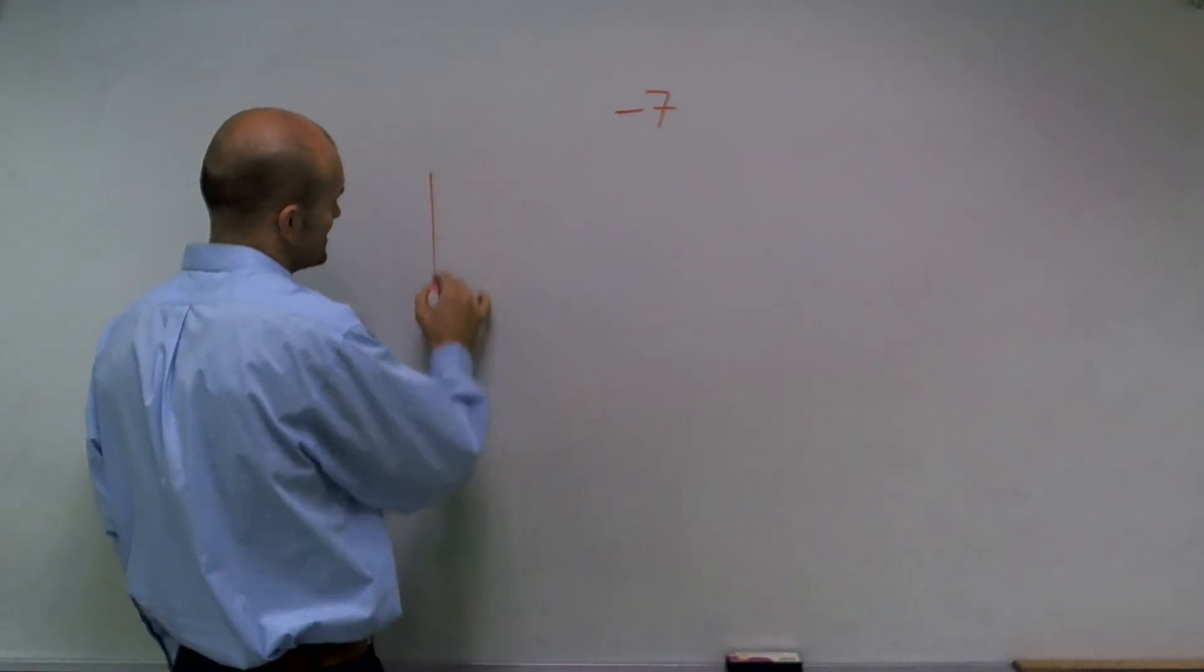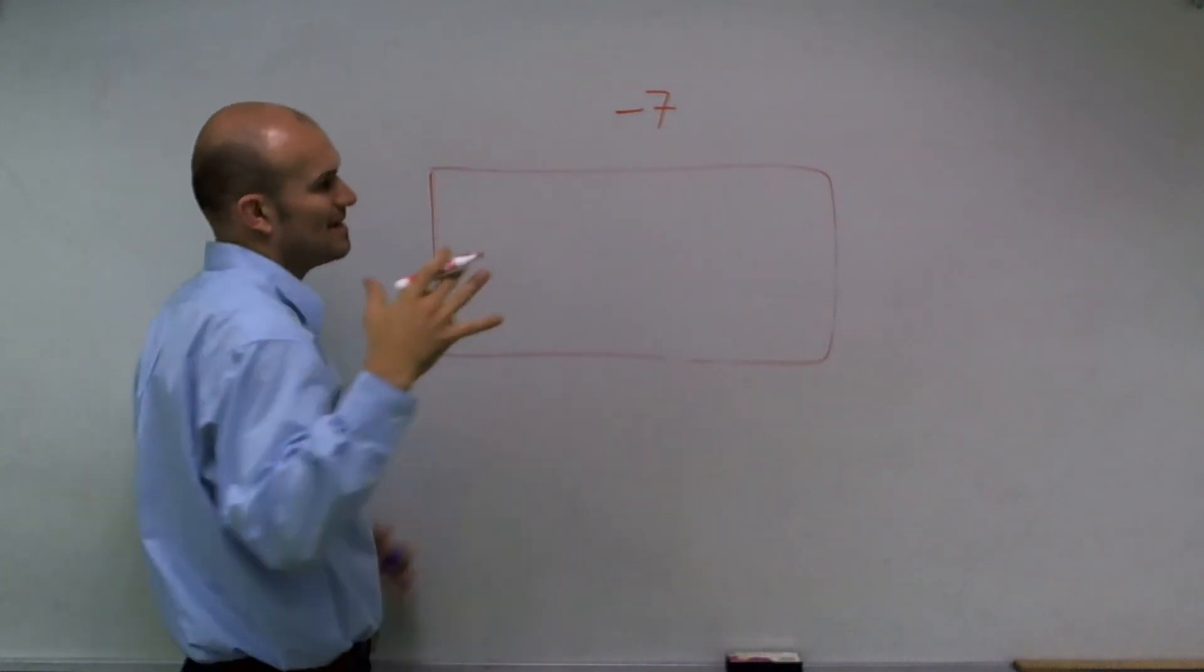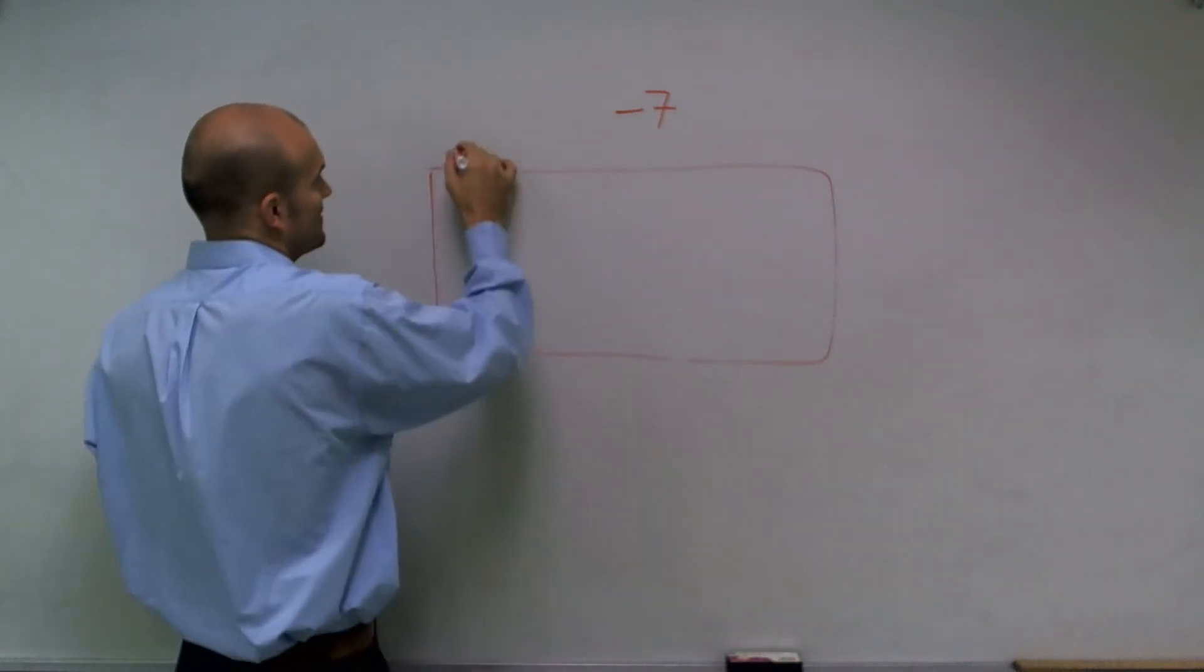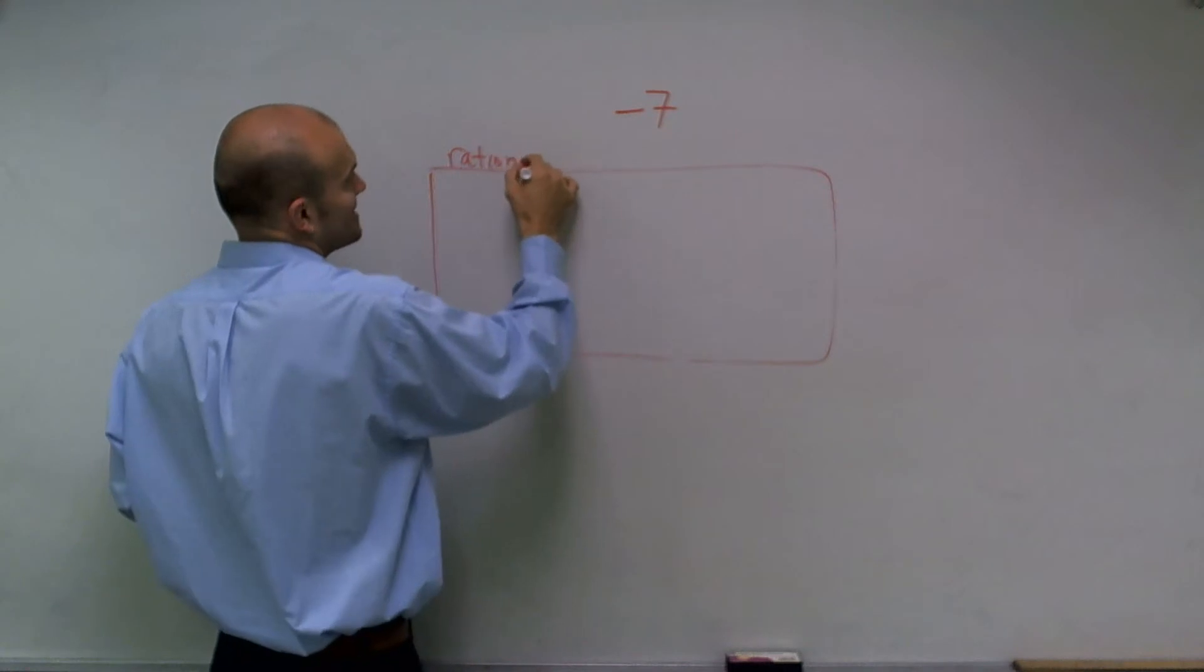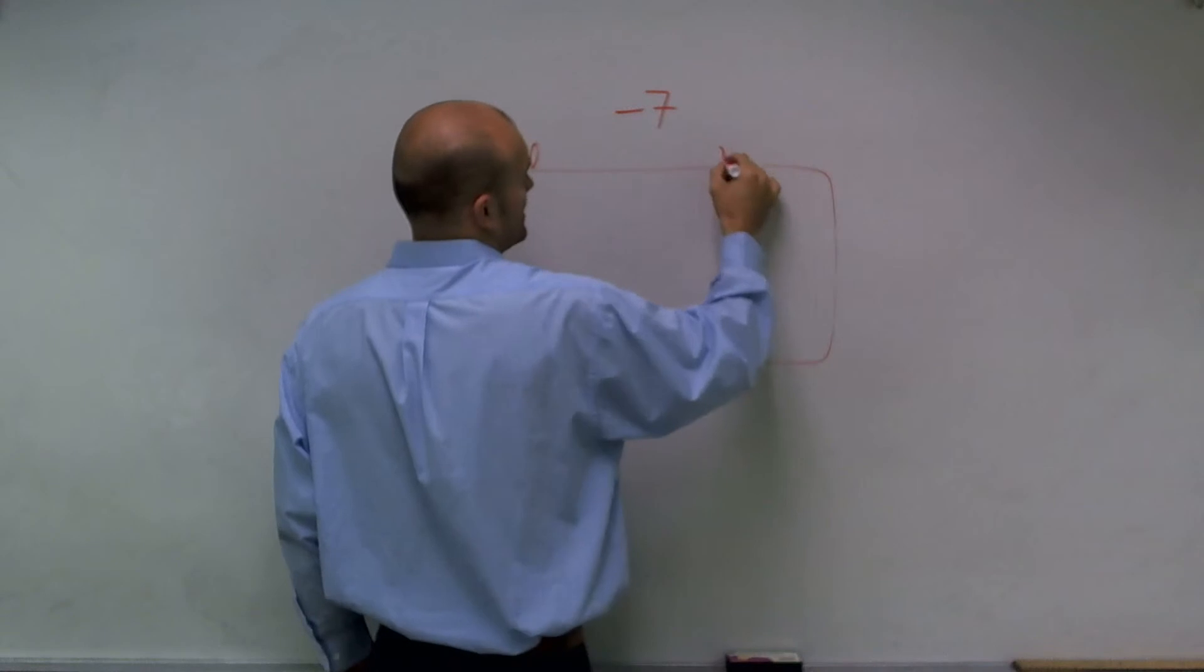The next thing we need to understand is how can we classify real numbers? There's two main categories that we're going to classify now. One as rational numbers, and the second one is irrational numbers.